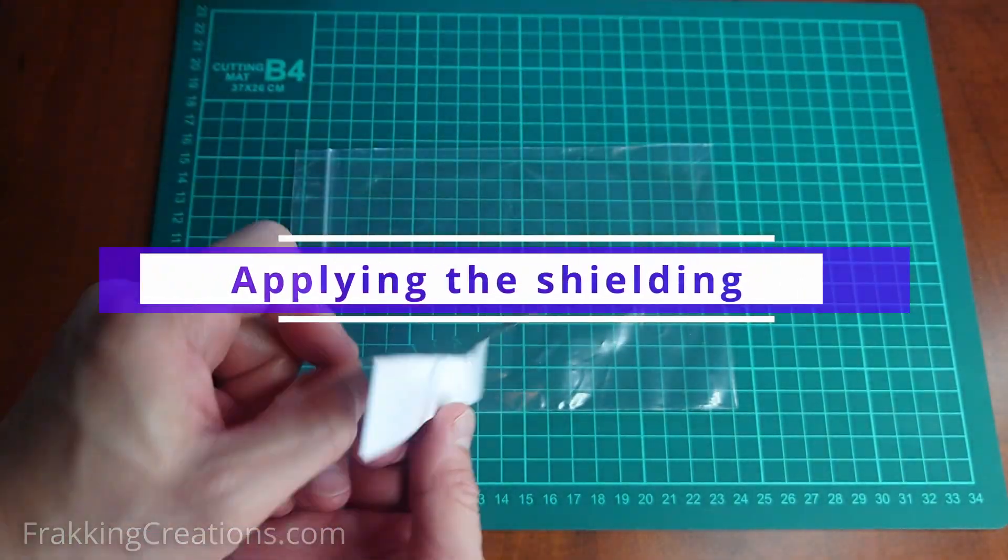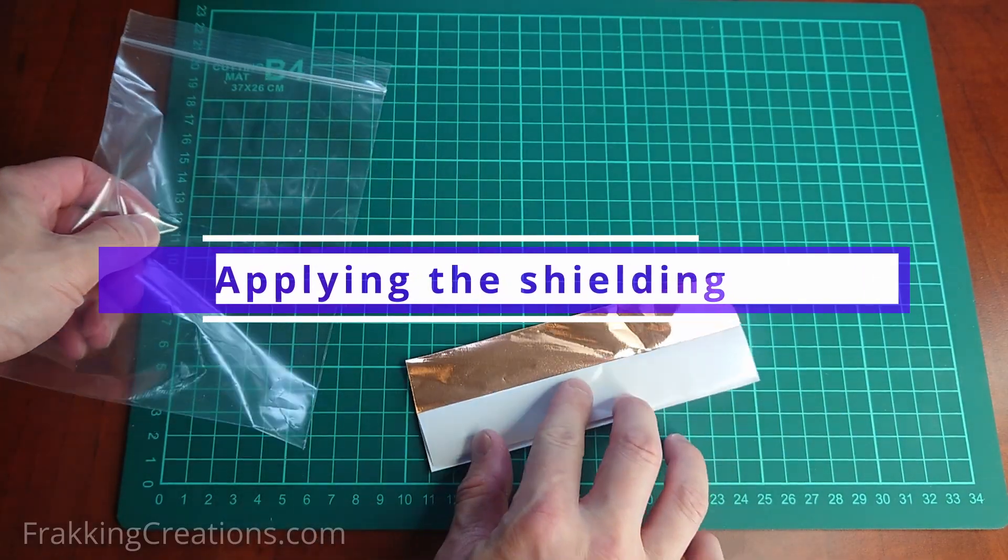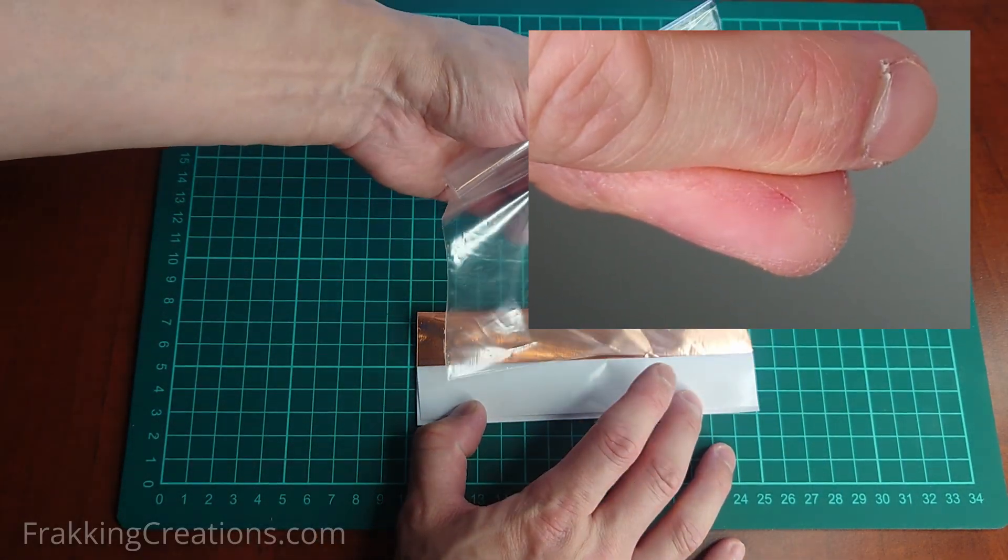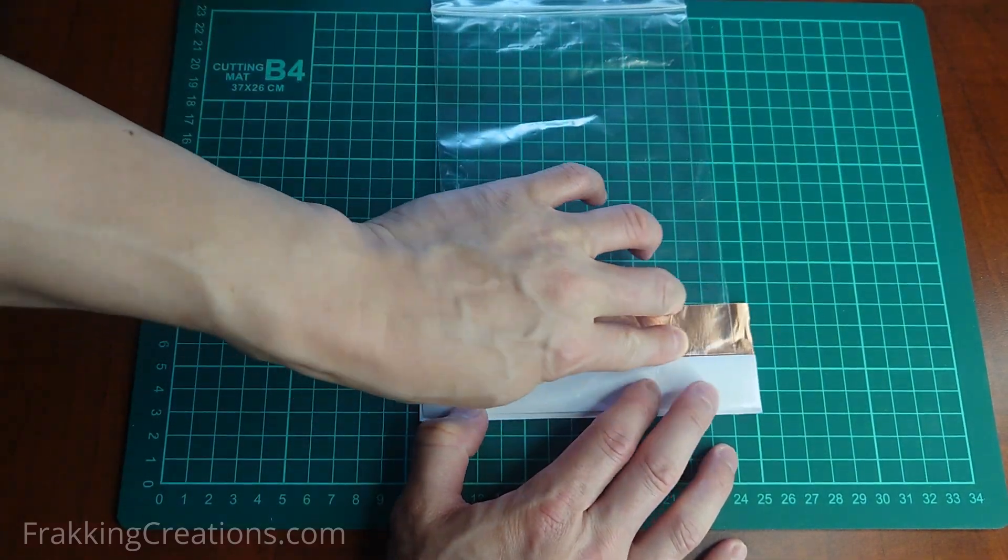Applying the shielding. Since the copper tape is sharp, make sure to be careful as you apply and smooth the tape. It can cause small cuts on your hands and fingers. To shield the bag properly, start by shielding the edges.